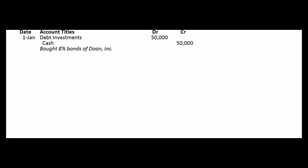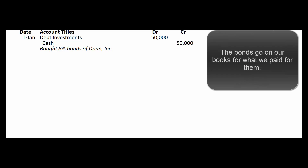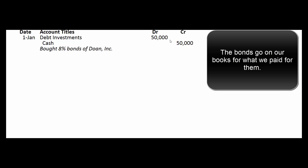Let's walk through an example. We buy $50,000 worth of Doan Inc's 8% bonds at par value with no brokerage fee. So we debit an account called debt investments for $50,000 and credit cash for $50,000.